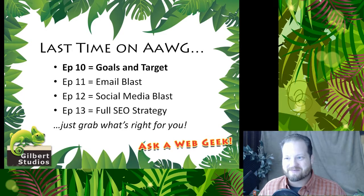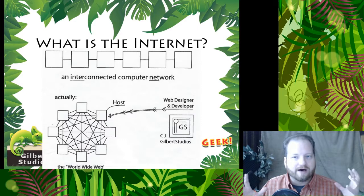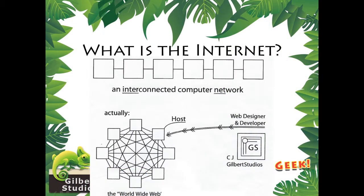The first concept I want to present: what is the internet? This is never to insult anyone's intelligence — it's simply to define some common words for our conversation. Imagine each one of these squares represents a computer and they're all hooked together — an interconnected computer network. That's where we get the word internet: interconnected computer network. The computers aren't hooked up in a straight line; they're hooked up like a circle where they're all connected to each other. That's where we get the phrase the worldwide web.